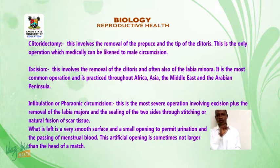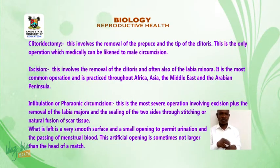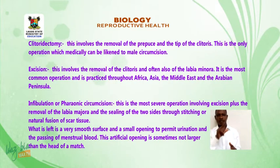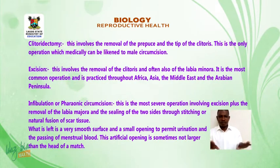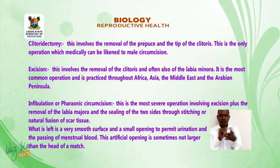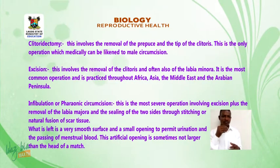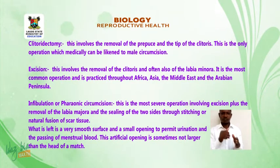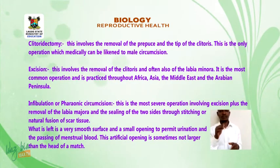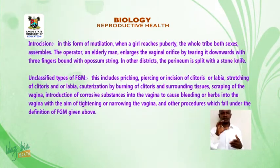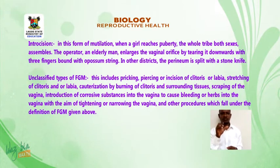Infibulation involves the sealing of the two sides through stitching or natural fusion of scar tissue. What is left is a very smooth surface and a small opening to permit urination and the passing of menstrual blood. This artificial opening is sometimes not larger than the head of a match. Type four, introcision: in this form of mutilation, when a girl reaches puberty, the old tribe of both sexes assembles.